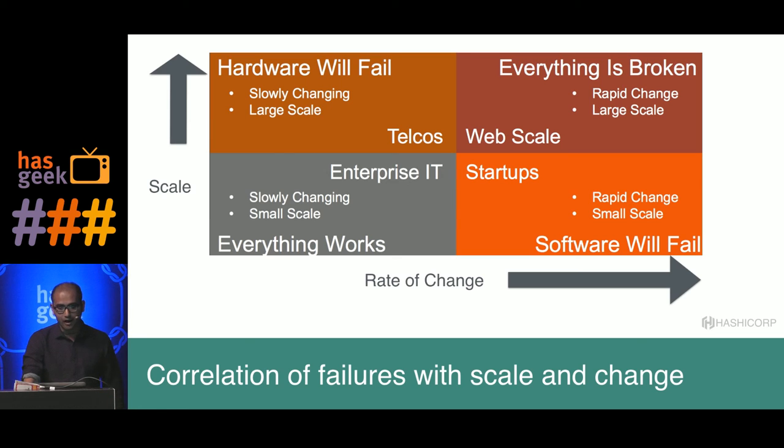The most interesting part of the graph is the top right — the web scale scenario. We will concentrate on web scale for the rest of the talk: how failure happens, and how we can make failures part of our life while still running services that work really well.